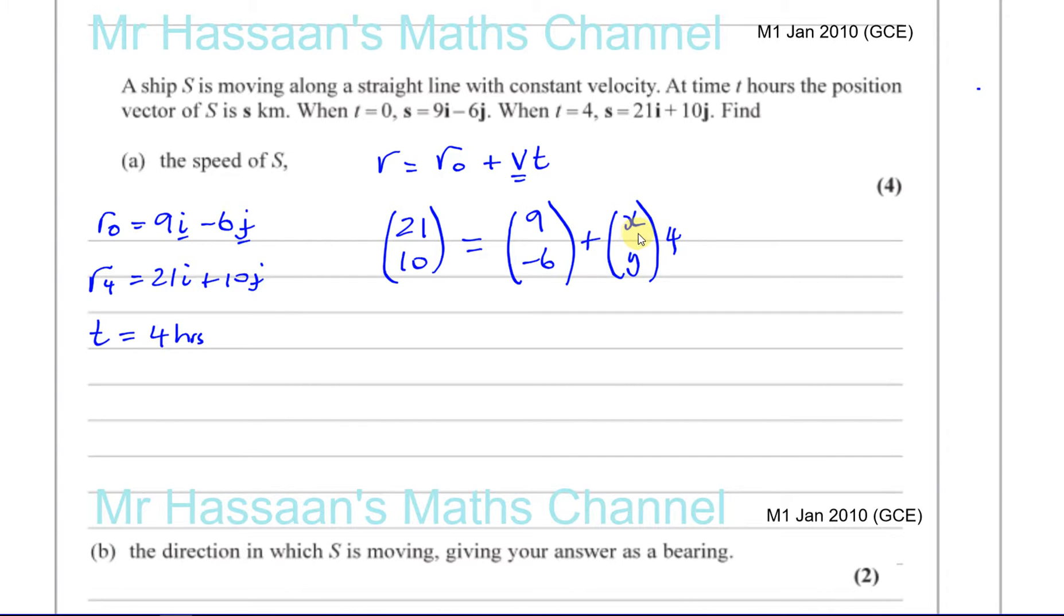We can find out what this velocity vector is very simply. We know that 21 is equal to 9 plus 4 times whatever that vector is, and we can say that 10 is equal to negative 6 plus 4 times whatever that component, that y component, that j value is.